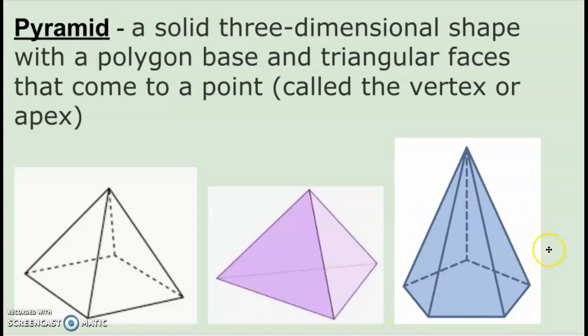This last one that I've shown here is a pentagonal pyramid. That means that the base is a five-sided pentagon and then it will have five triangular faces that come to a point at the apex. So you can see there are a variety of different types of pyramids.